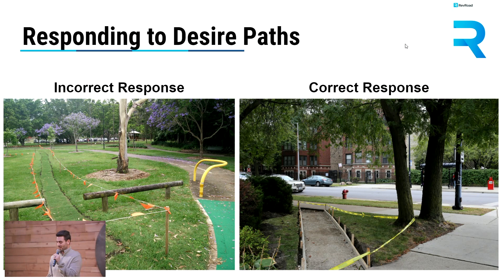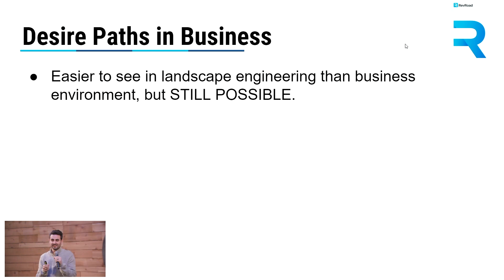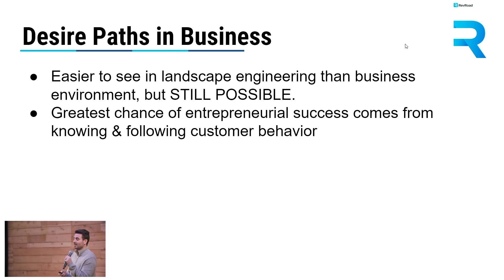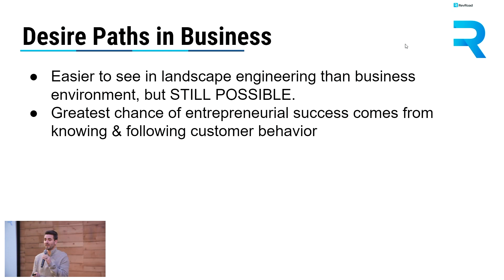So let's look at this in business now. In the real world with landscaping and civil engineering, it's easy to see when a desire path exists — you can actually see a worn pathway through the grass. It's a little bit harder in business, but it is just as possible if you know how to look for it. The greatest chance that entrepreneurs and young growing companies have of success is from knowing and following customer behavior — knowing what your desire path is in whatever industry you're choosing to tackle.